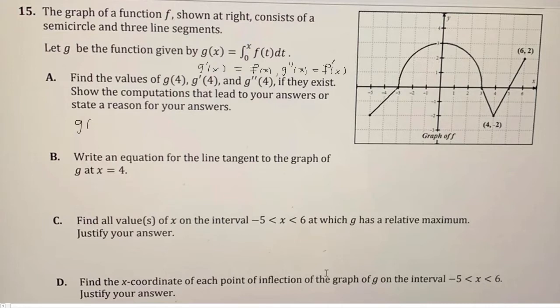We want to find the value of g of 4, which really is the integral from 0 to 4 of f of t dt. So that means we have to find this area plus this area. This area here from 0 to 3, that's a quarter of a circle. So that's going to be pi r squared times one fourth.